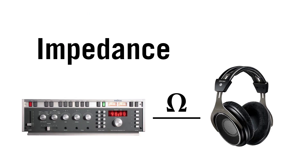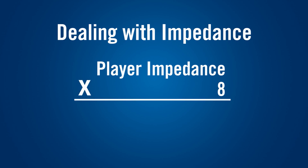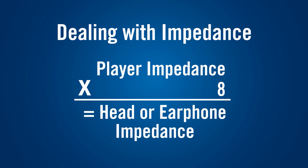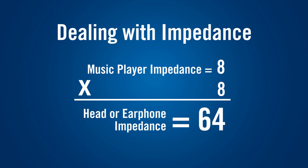Last but not least: impedance. This is one that always confuses people. What does it really mean and is this something that only engineers need to be concerned about? Impedance is important because you want to make certain you're following a couple of important rules of thumb — your player or source device should have an output impedance that is lower, oftentimes by a factor of eight, than the impedance of your earphone or headphone. So if your music player has an impedance of say eight ohms, you'd like the impedance of your earphones and headphones to be at least a few times higher — 64 ohms would be a good rule of thumb.